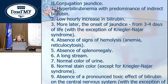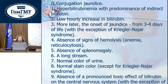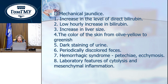Conjugated jaundice: hyperbilirubinemia with predominance of indirect bilirubin, low hourly increase of bilirubin, later onset of jaundice from 3 to 4 days of life with the exception of Crigler-Najjar syndrome, absence of signs of hemolysis such as anemia and reticulocytosis, absence of splenomegaly, prolonged course, normal urine color, normal stool color except in Crigler-Najjar syndrome, and absence of pronounced toxic effect of bilirubin on the central nervous system.